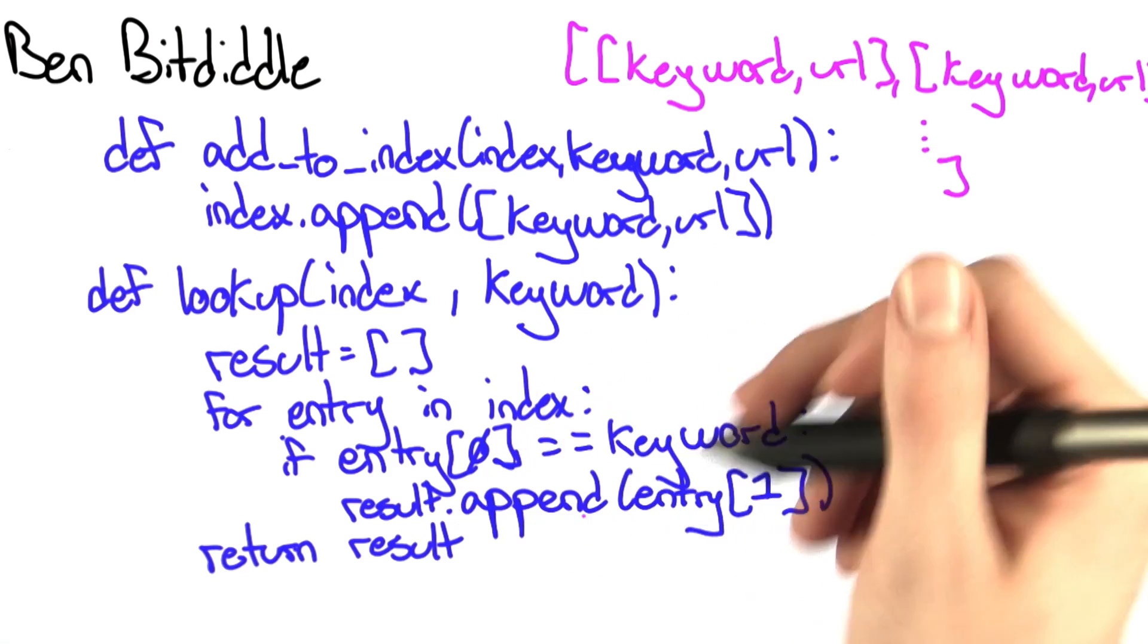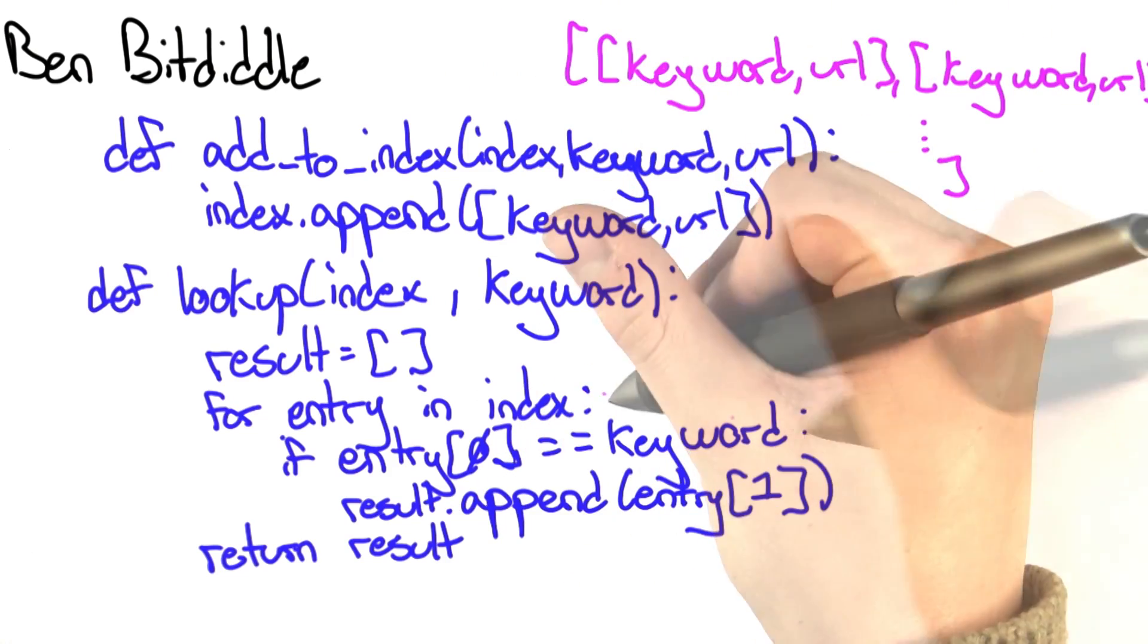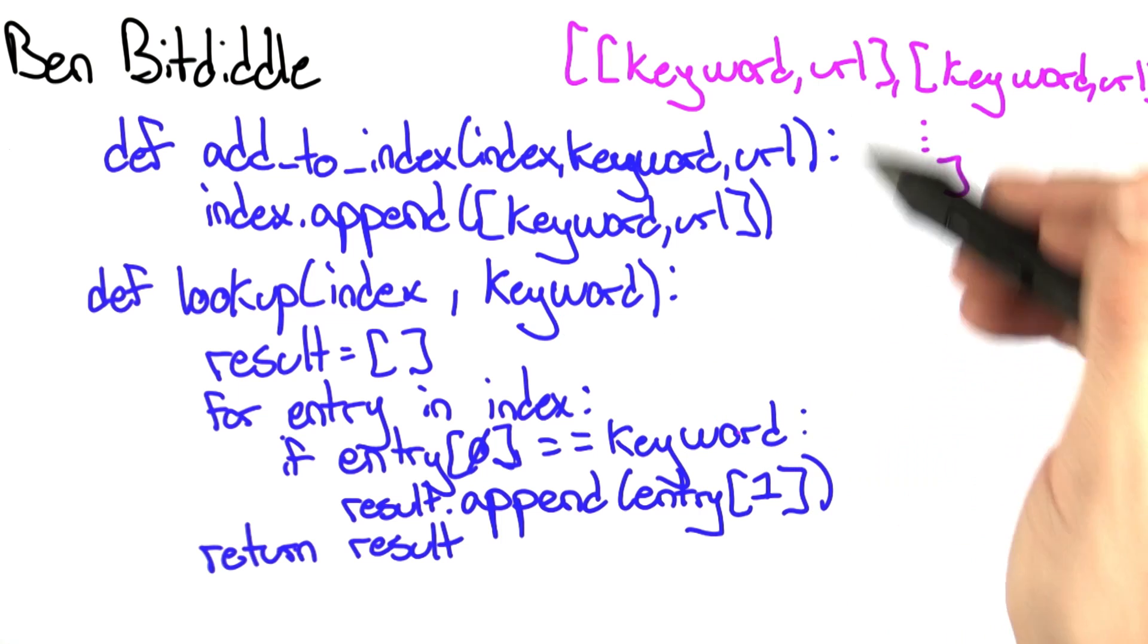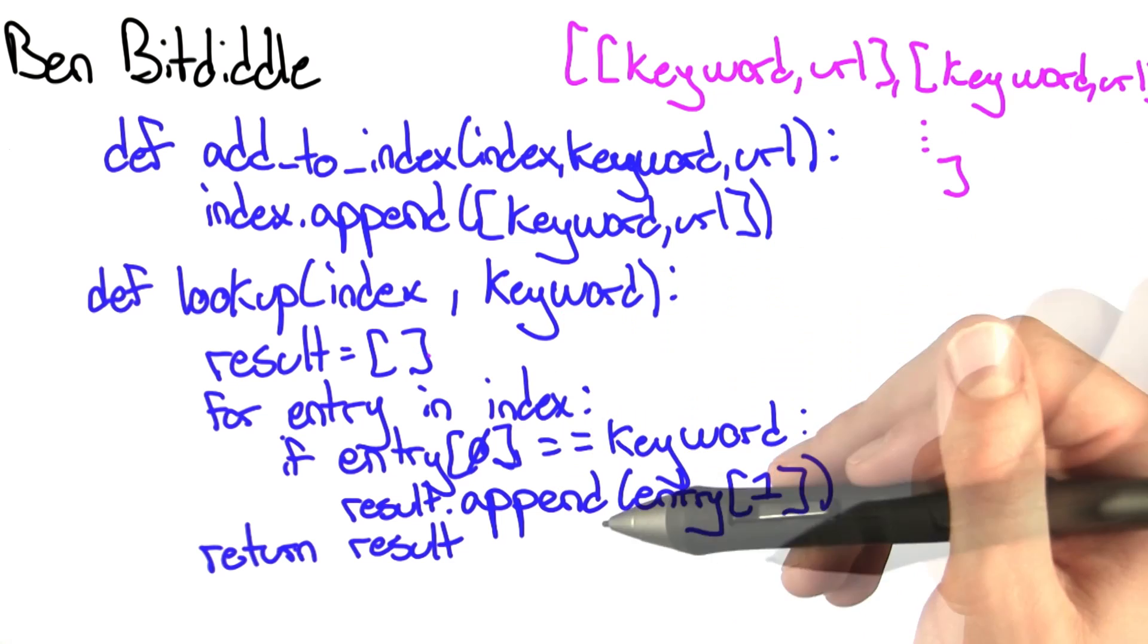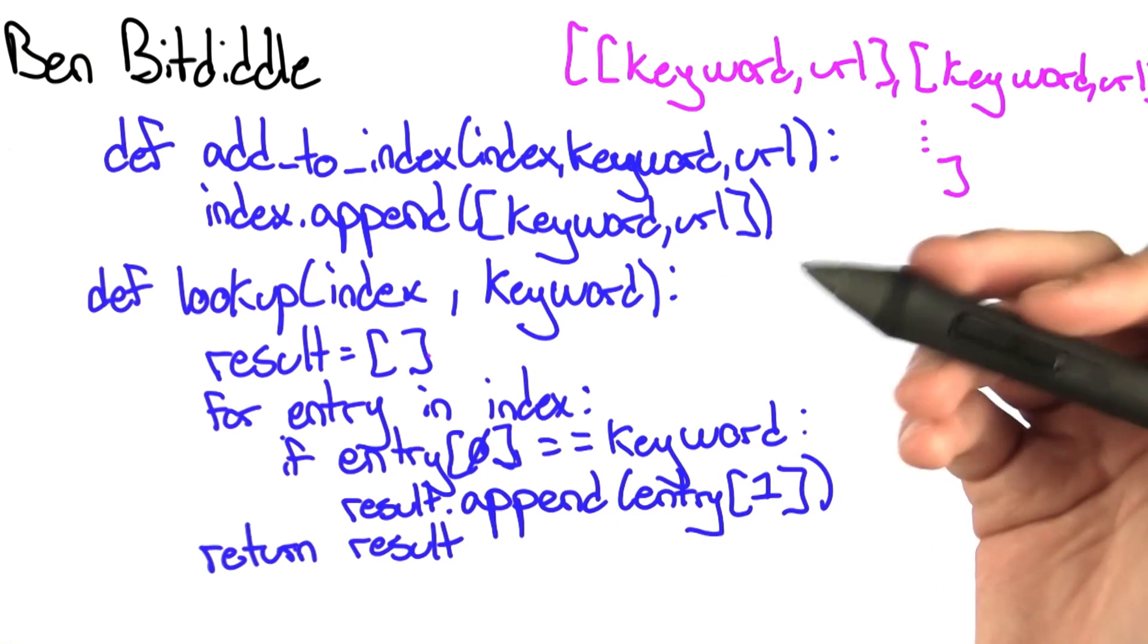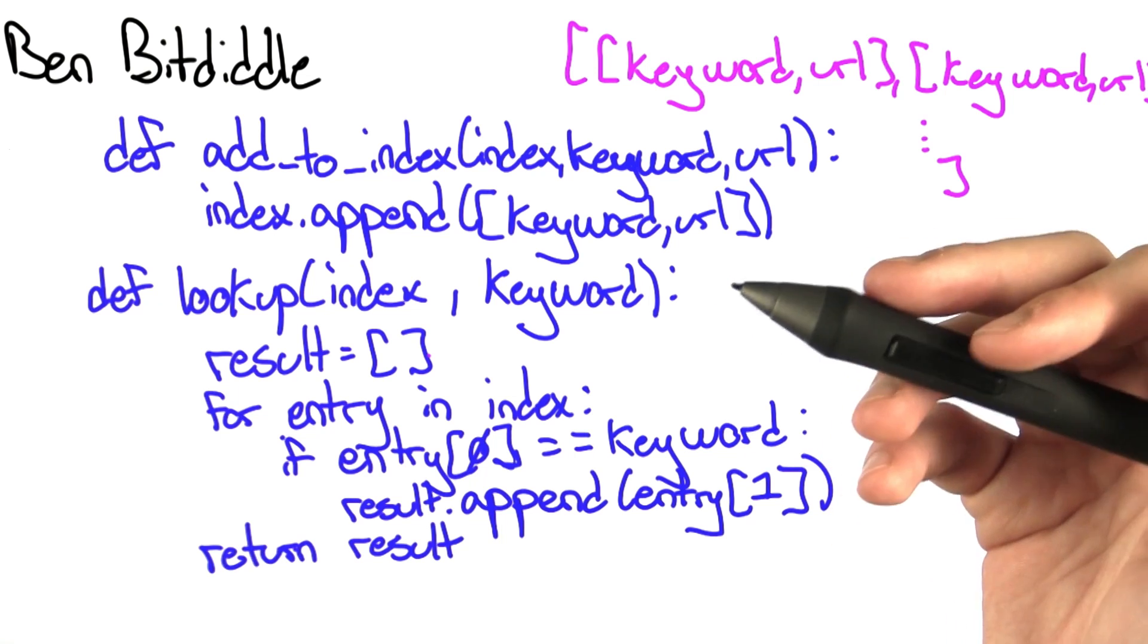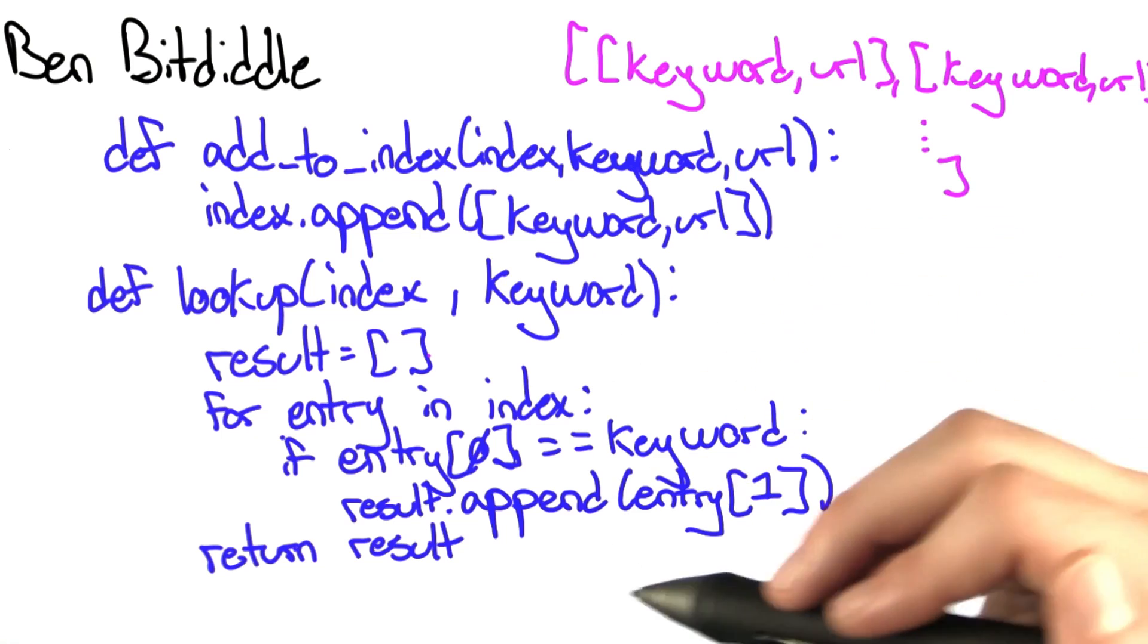Looking at the lookup procedure, it'll go through the entire index, and every time it finds a keyword that matches the one it's looking for, it'll append the URL to a result list. In the end, you'll get a list of all the URLs. In fact, it'll be the same list you would if you used the original addToIndex and lookup procedures.